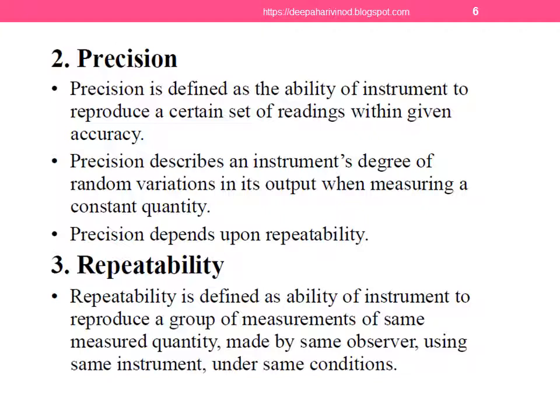Next is precision. Precision is defined as the ability of the instrument to reproduce a certain set of readings within given accuracy. How precisely it produces the output. If we do the same experiment, how often are we getting the same result? That is precision. Precision describes an instrument's degree of random variation in its output when measuring a constant quantity. Precision depends upon repeatability. If the same experiment is conducted several times and we observe the result, if repeatedly you are getting almost the same result, we can say the device is precise.